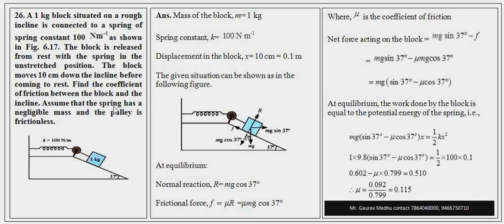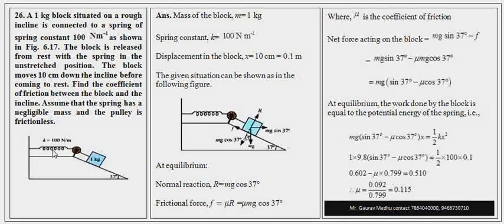Assume that the spring has negligible mass and the pulley is frictionless. The problem states a 1 kg mass on an inclined plane at 37 degrees with the horizontal. This mass is connected to a spring with the given spring constant, and the mass moves 10 cm down the incline.